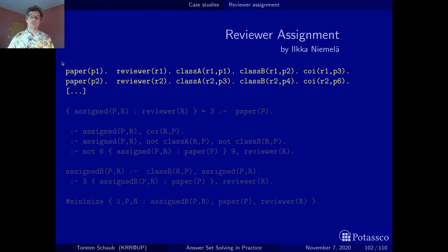The problem instance, just indicated here by the first few lines, but you can imagine there's much more, reflects the database of the conference management system. So you have a table of all the papers, a table of all the reviewers, their first choices, their second choices, and their conflict of interests.